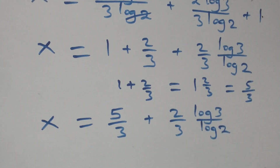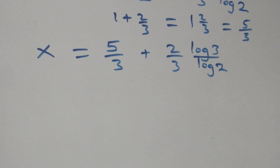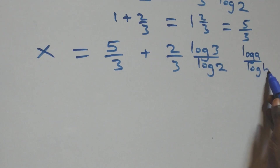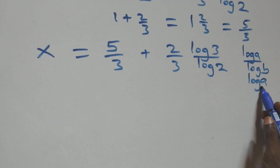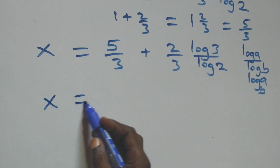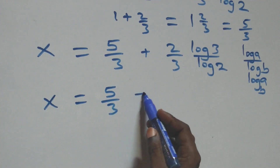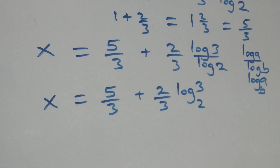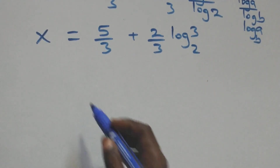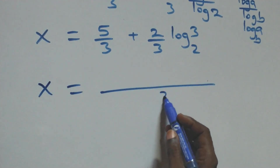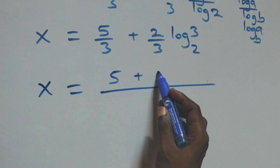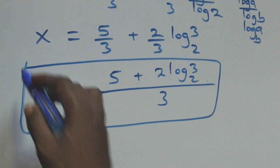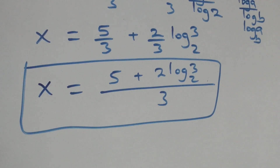Applying the change of base rule — log A over log B equals log A to base B — we rewrite log 3 over log 2 as log 3 base 2. So x equals 5 over 3 plus 2 over 3 log 3 base 2. Combining into one fraction over 3, we get x equals 5 plus 2 log 3 base 2, all over 3.